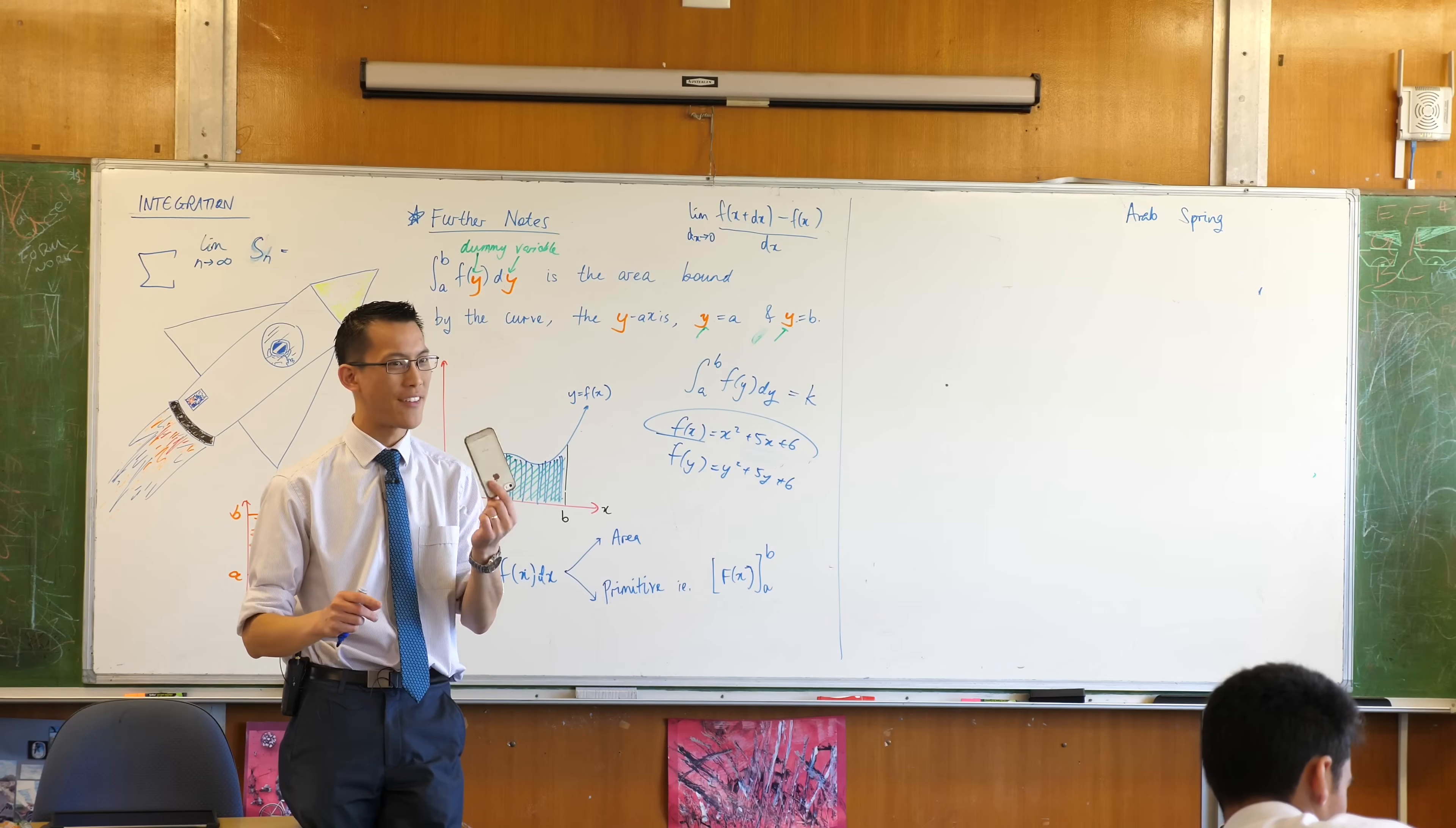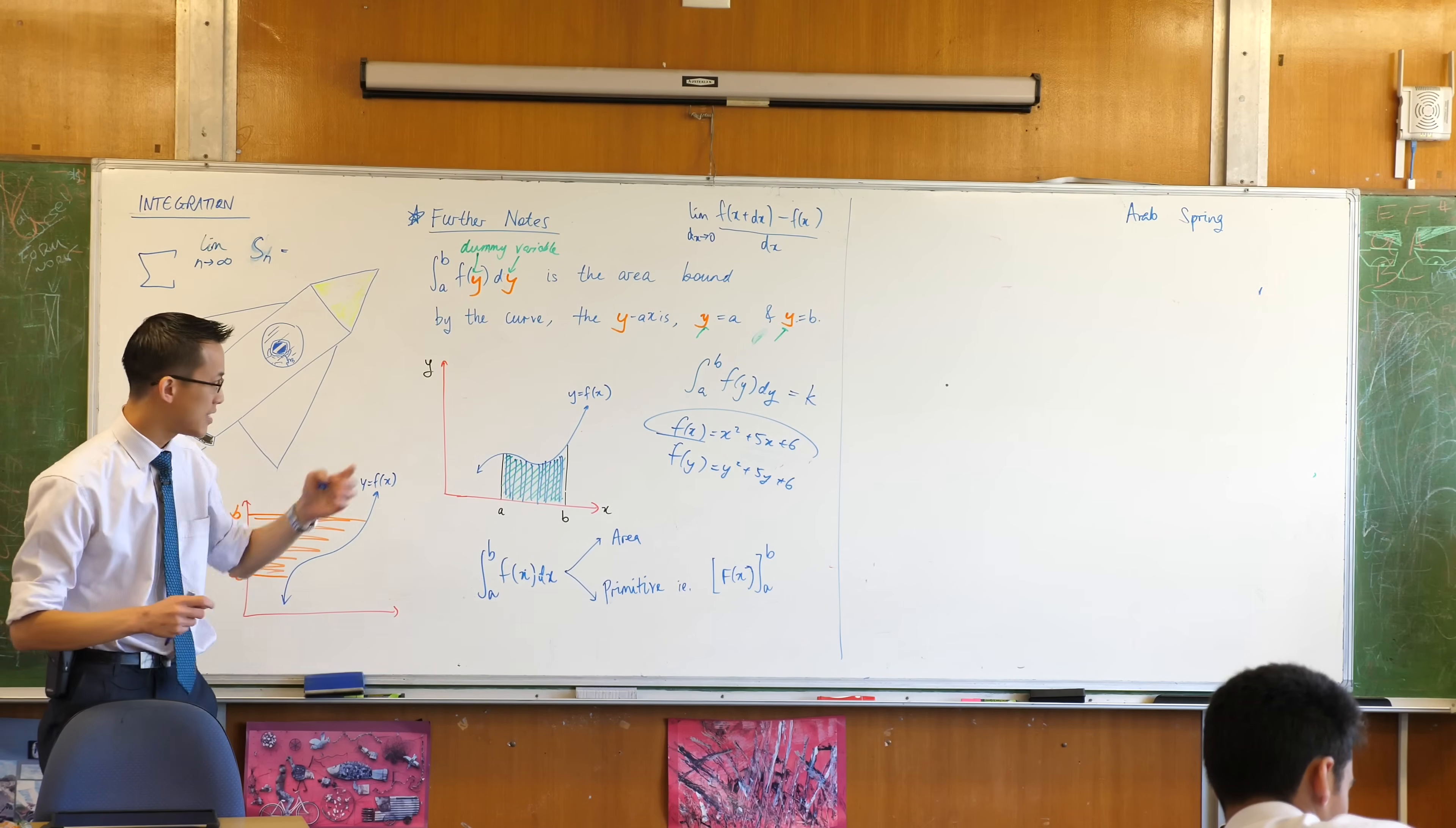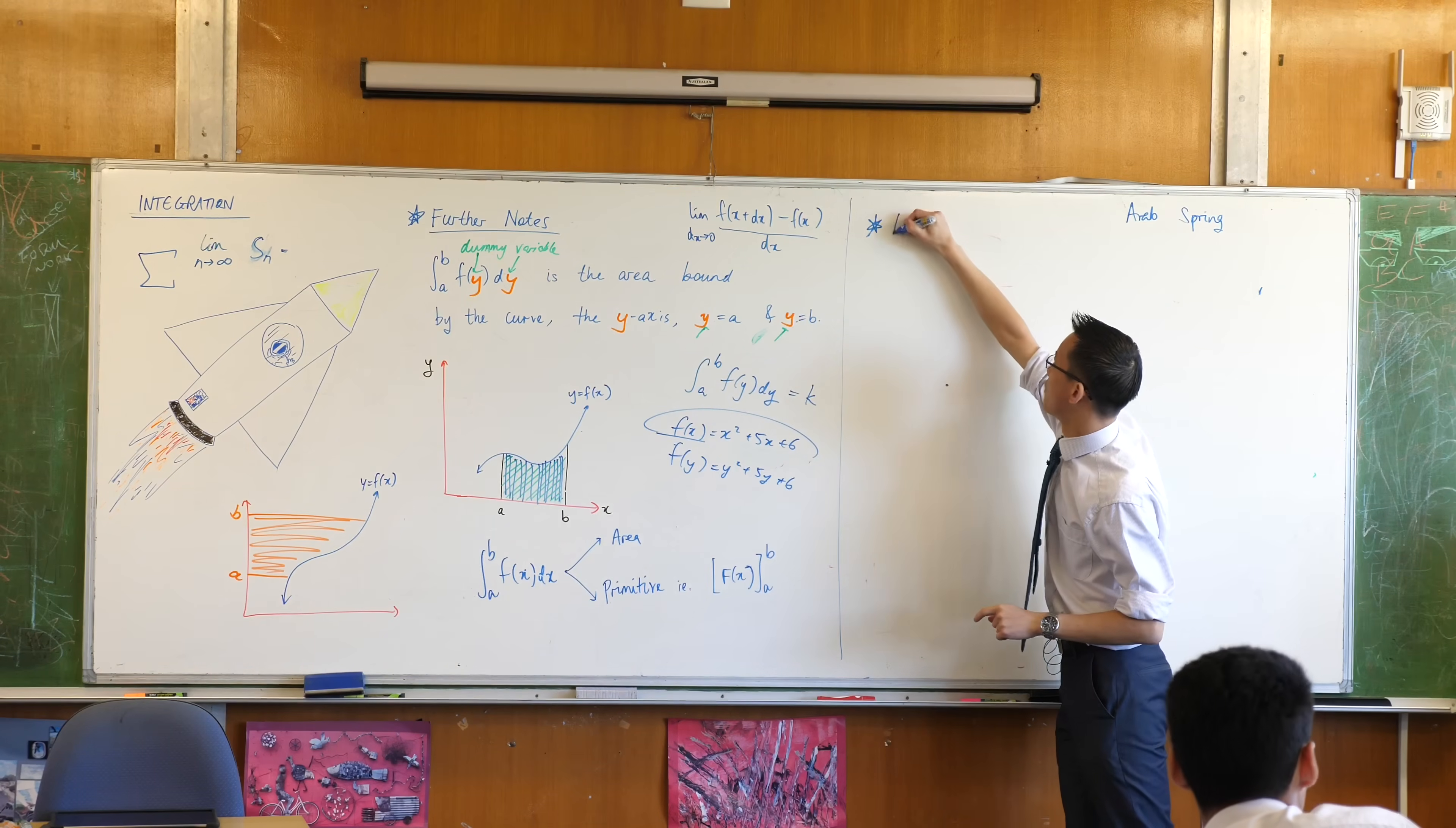So we invent things and we have an intent for them, like find an area, right? A simple problem. And then we discover they can do things. These inventions we have, they can do things that we didn't necessarily expect. So underneath this, I want to make a little subheading, which is an unexpected side effect.